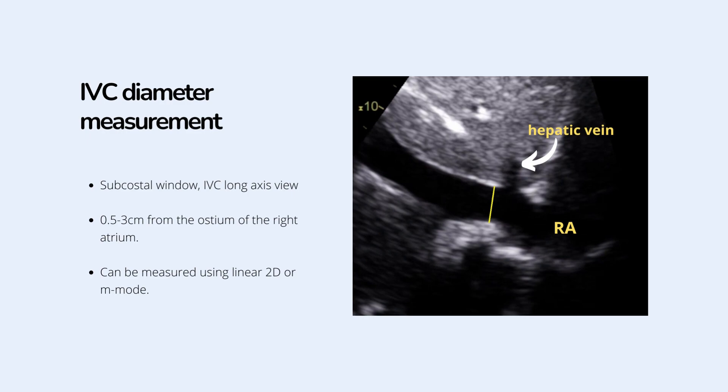Use the subcostal window with IVC long axis view. IVC is measured just proximal to the entrance of hepatic veins, approximately 0.5 cm to 3 cm from the ostium of right atrium. It can be measured by direct 2D linear caliper on maximum expiration and inspiration, or by using M-mode modality.